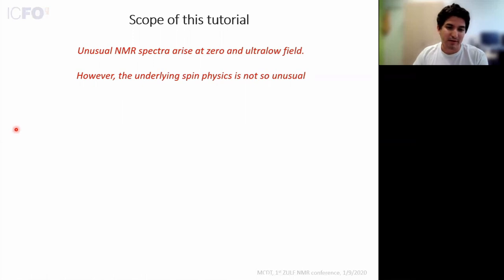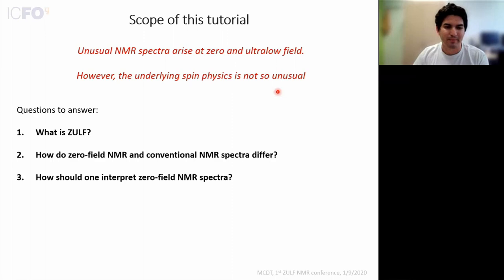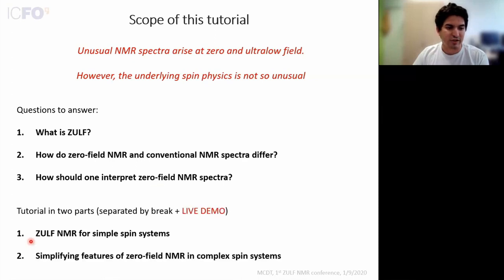The material I will cover in this tutorial is aimed for you to take away this: while we observe NMR spectra in ZULF which may seem unusual, the underlying spin physics is not so unusual. We'll consider what ZULF means, the difference between ZULF and conventional NMR spectra, and whether there's some middle ground. How to interpret a zero-field spectrum. In the first part I'll focus on simple spin systems with only one type of J coupling, then more advanced behavior. In between, we'll have a break to talk about research in our lab, and may have time for a live demo of ZULF NMR.